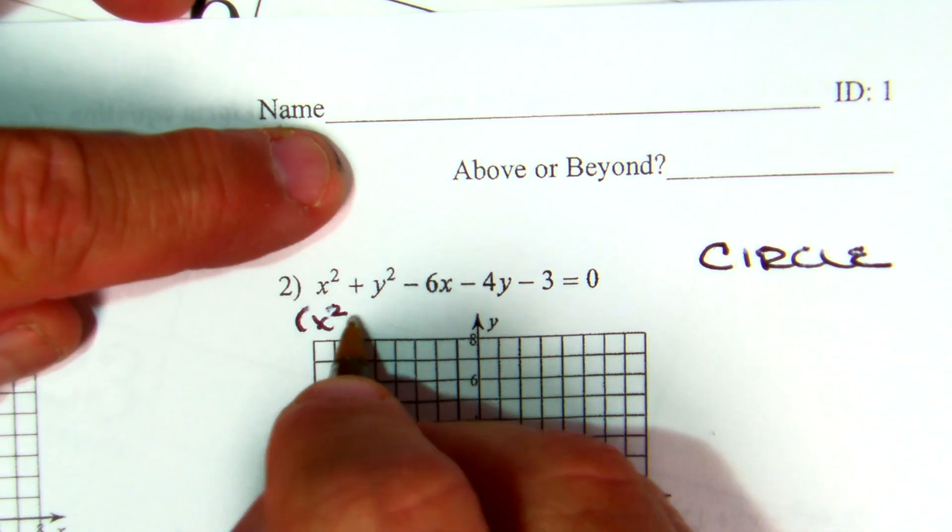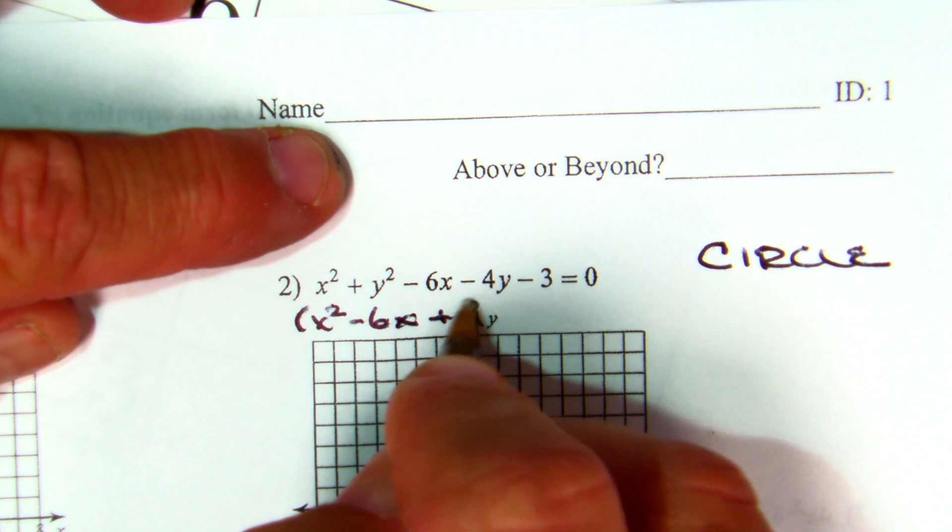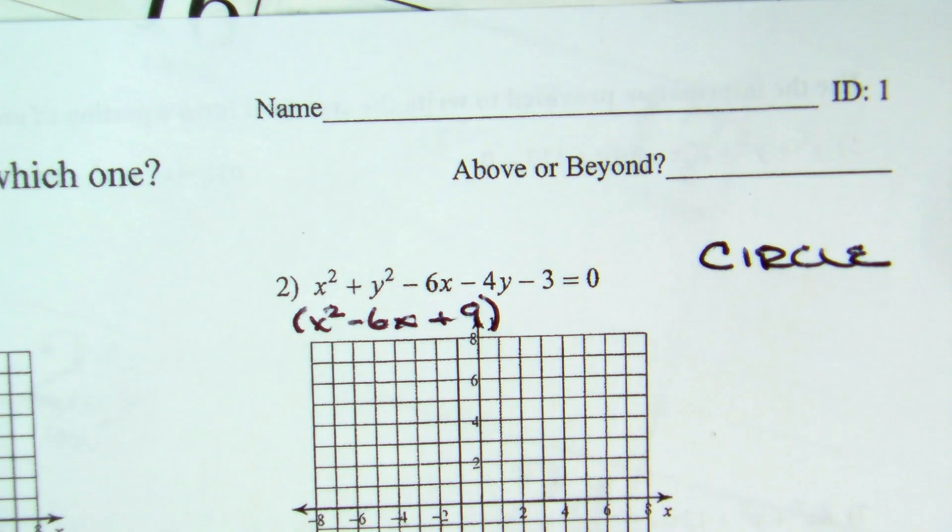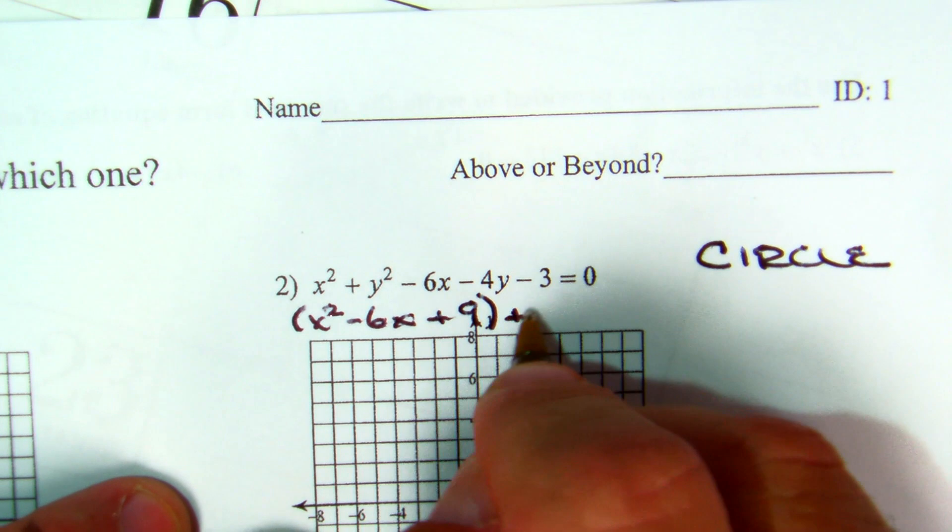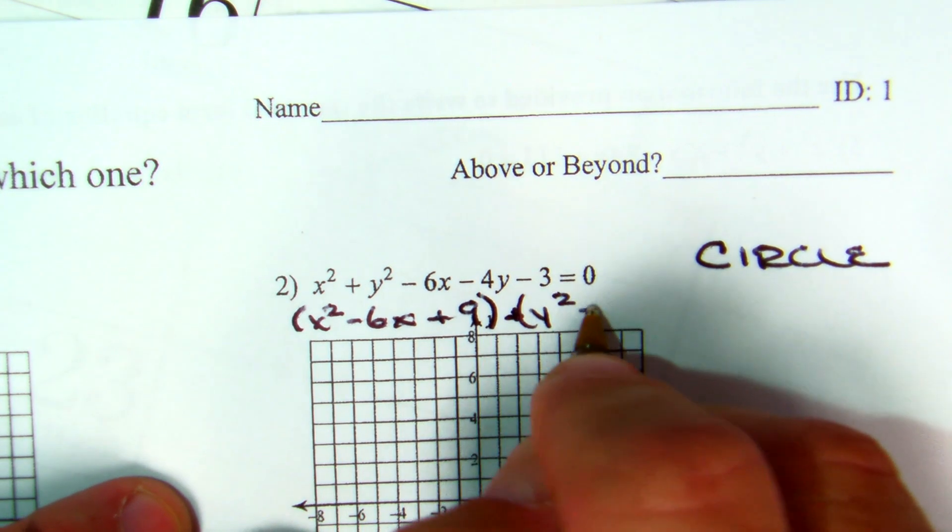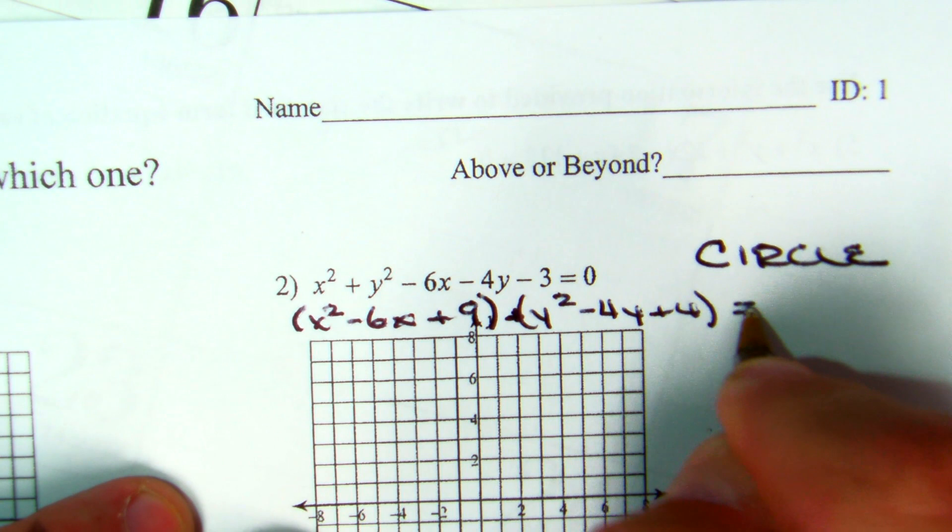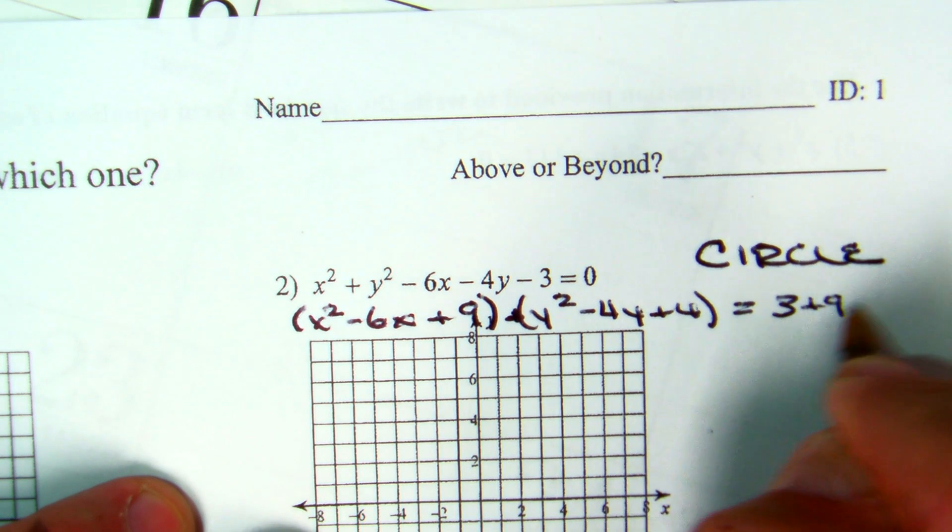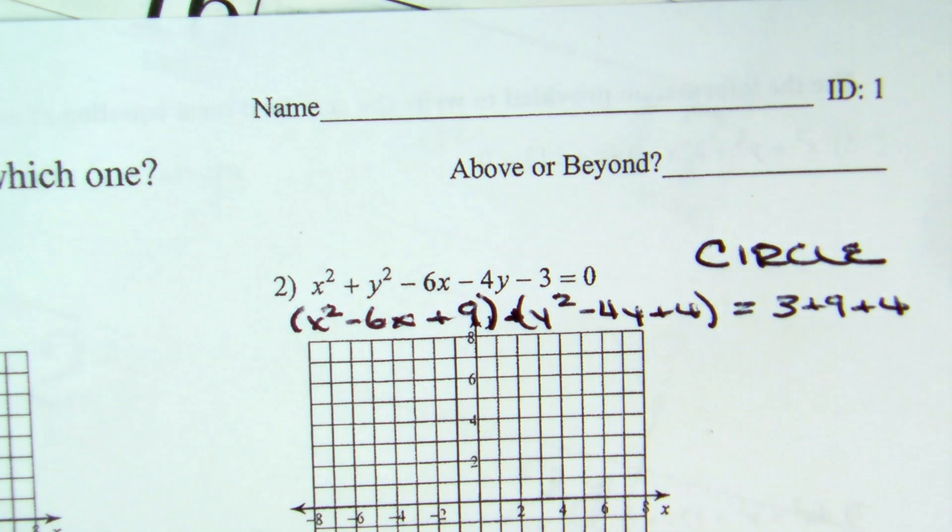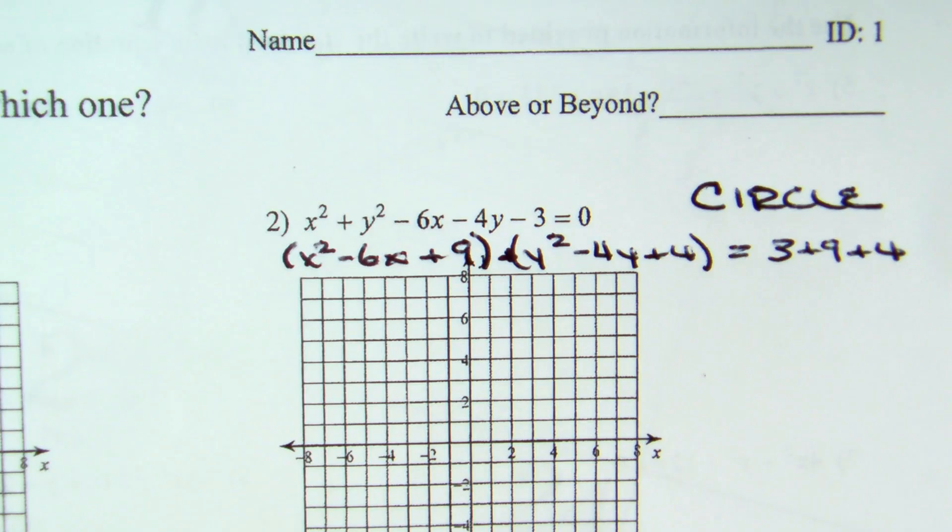x squared minus 6x plus 9. Everybody okay with that? Half of 6 is 3. 3 squared is 9. Plus y squared minus 4y plus 4 equals 3 plus 9 plus 4. So, I grouped them together, completed the square, added the same numbers on both sides.